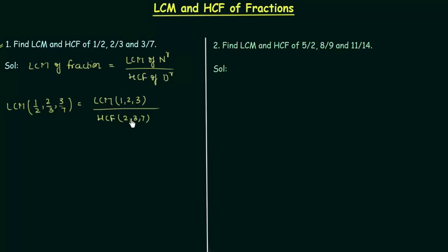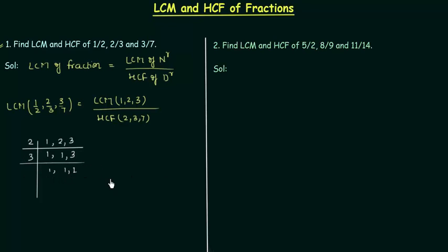First we will find the LCM of 1, 2, 3 using the same method from the last presentation. LCM of 1, 2, 3 is equal to 1 × 2 × 3, which equals 6.